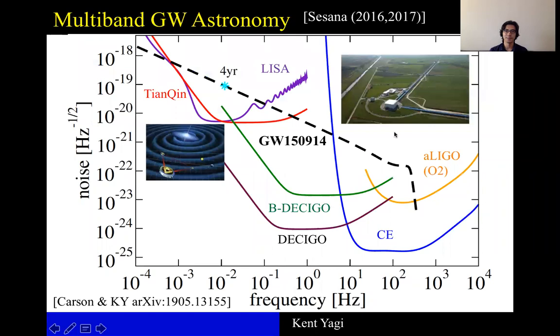To begin, I'd like to introduce this plot that was pointed out by Alberto Sesana right after the detection of GW150914 that if LISA was in operation several years before this detection, then LISA would have seen the signal.